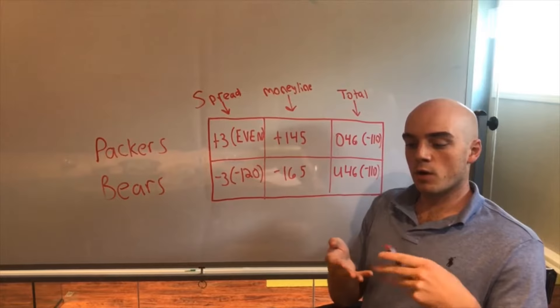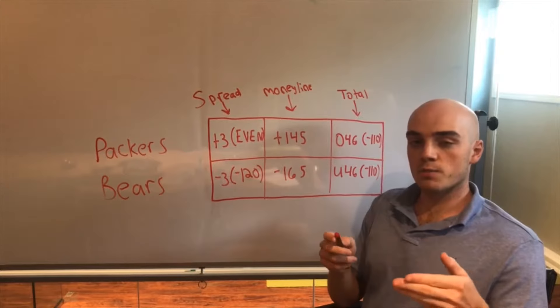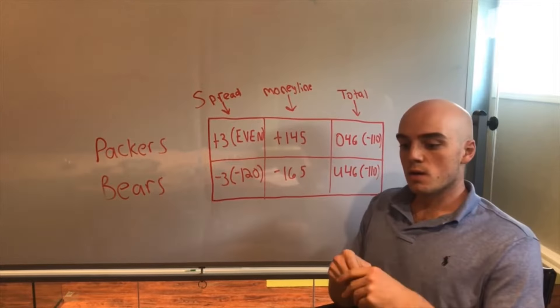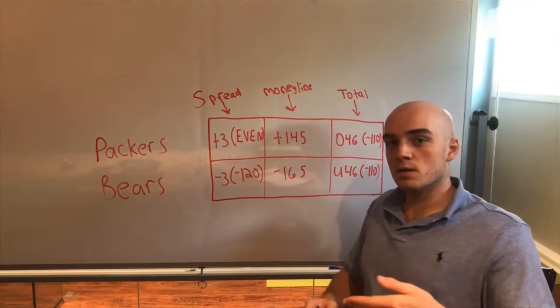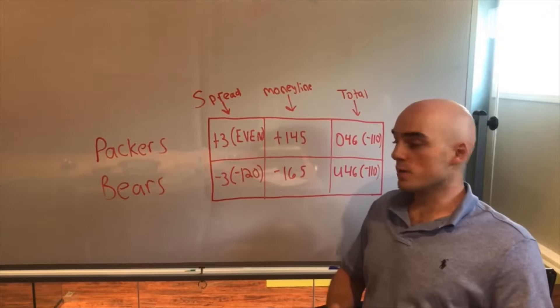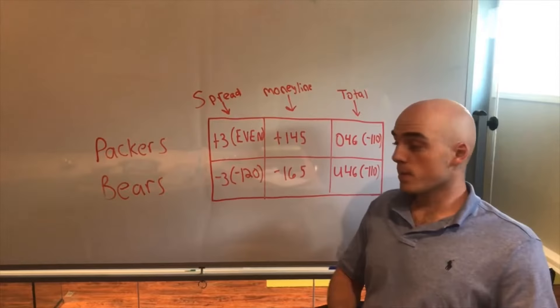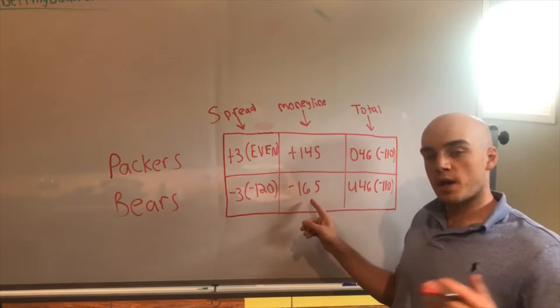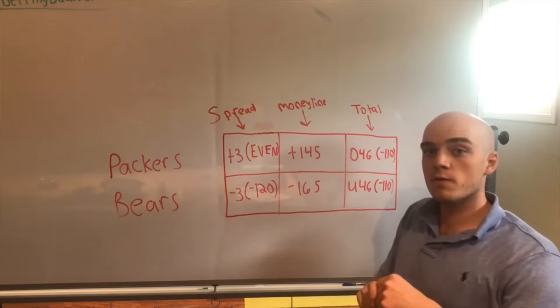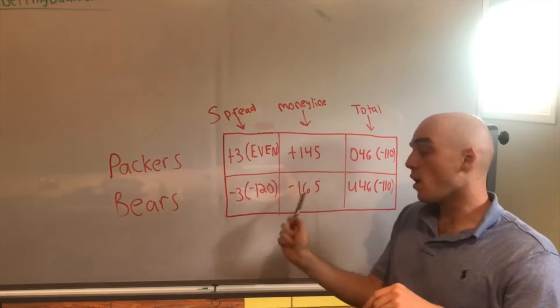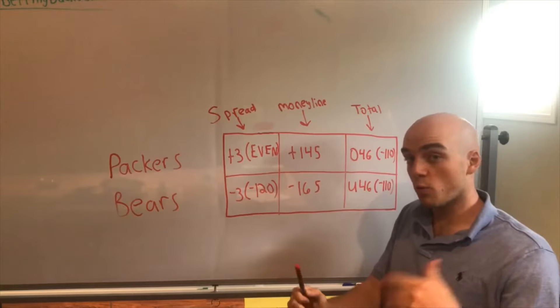So plus 145. Think of odds in terms of a hundred - anything over a hundred like plus 100, plus 101, plus 102 is money that you're getting on the dollar. So if it's plus 101, for every $100 you're going to get $101 back.